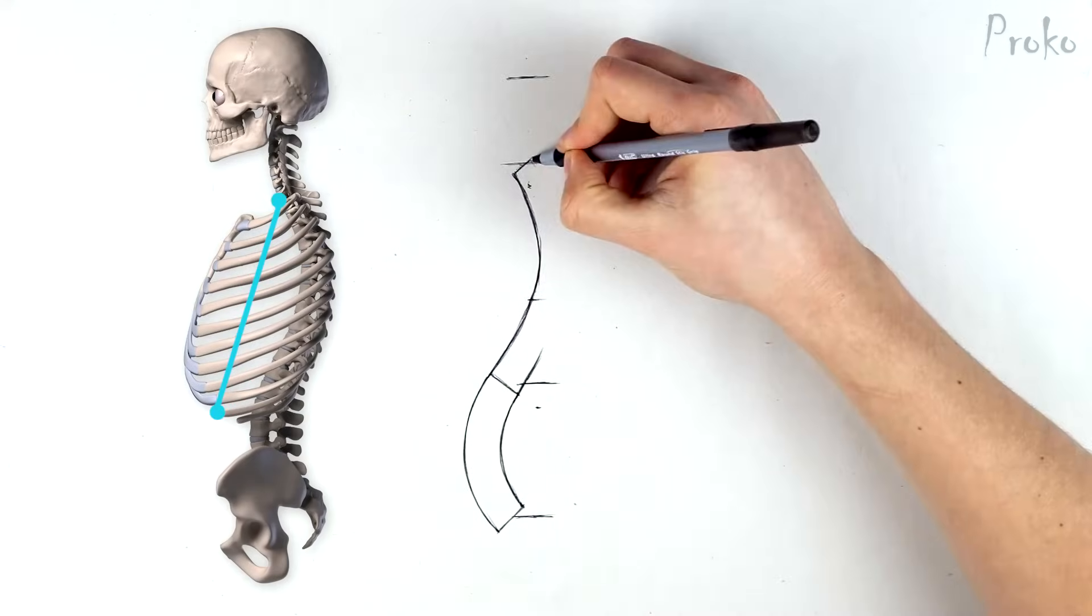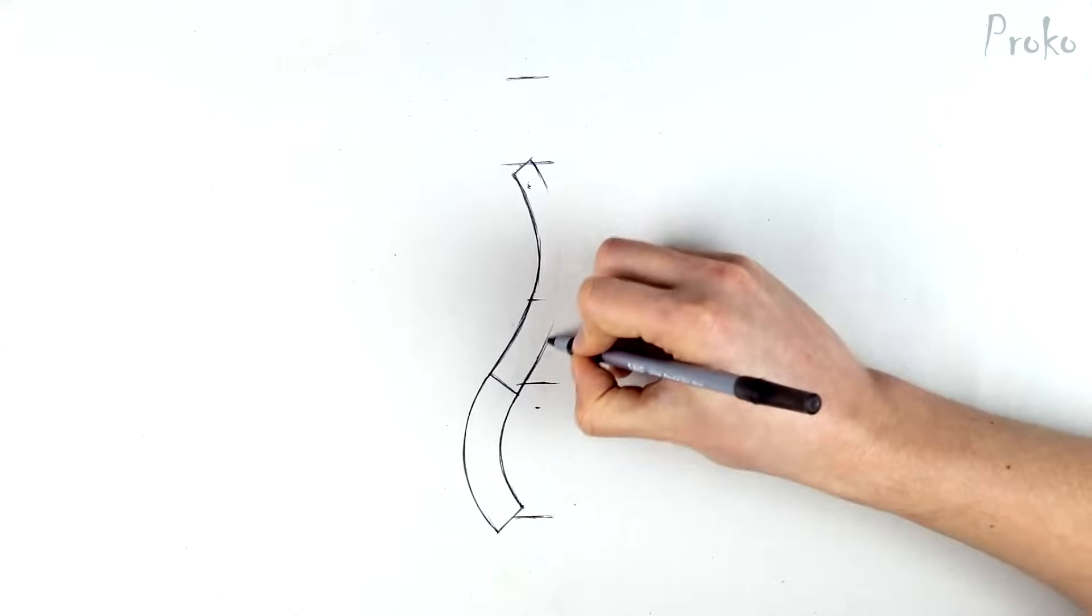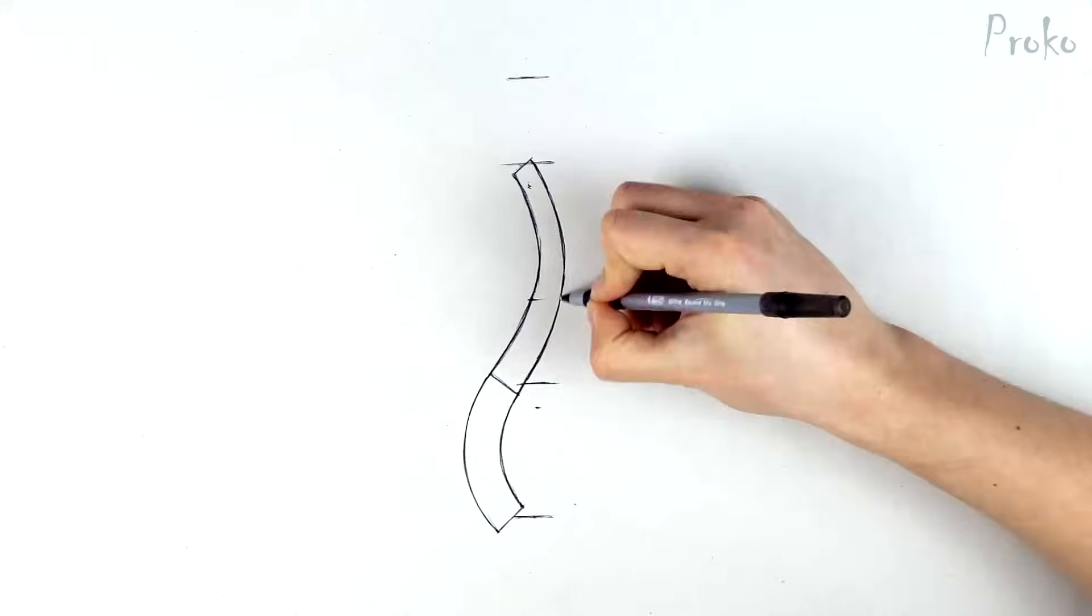And again, this is for the neutral pose. The thickness of the cylinder will get thinner as we get closer to the top.